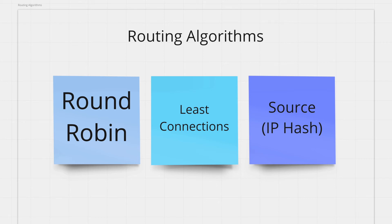Now that we know the fundamental idea behind load balancers, let's take a closer look at how the load balancer decides which server to forward your request to. There are many algorithms that a load balancer can use to distribute traffic. Let's take a look at some of the most common ones. The most simple algorithm is the round robin algorithm. The load balancer just arranges the backend servers in order and then sends user requests to them sequentially, in the same order all the time.